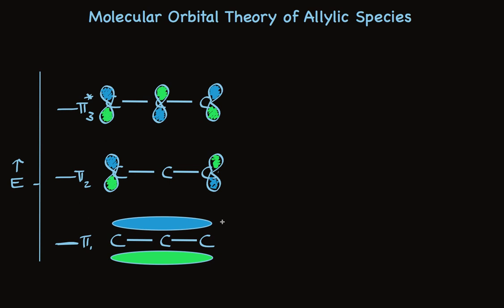So when we have the allylic cation, which only has two electrons in it, both of those electrons will be in the lowest molecular orbital, pi-1. They'll be found distributed throughout this allylic system.